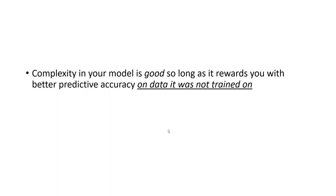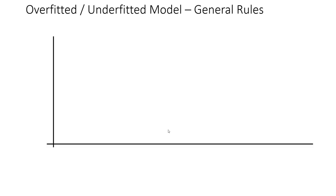This teaches us an important point: complexity in our prediction models is good so long as it rewards us with better predictive accuracy on data that it wasn't trained on in the first place. Let's look at the concept of overfitting and underfitting one more time using the traditional graph. On the x-axis we have prediction model complexity — from less complex on the left to more complex on the right. This applies to any type of prediction model that can be made less or more complex by adding more parameters.